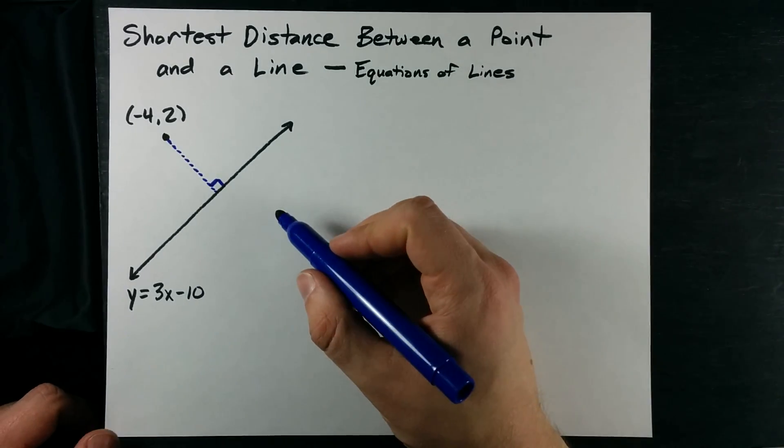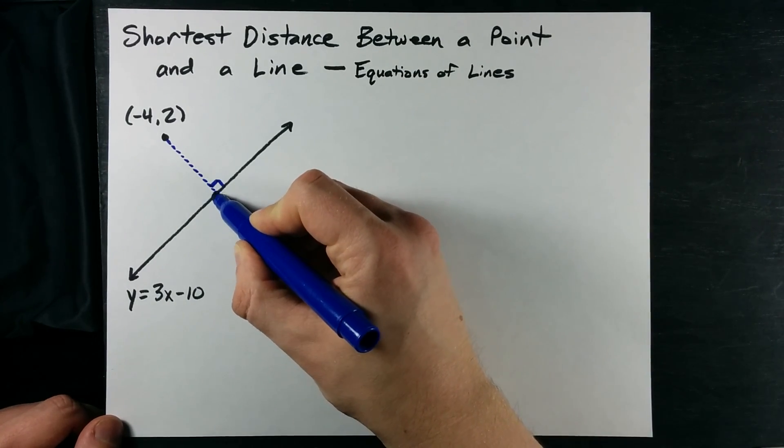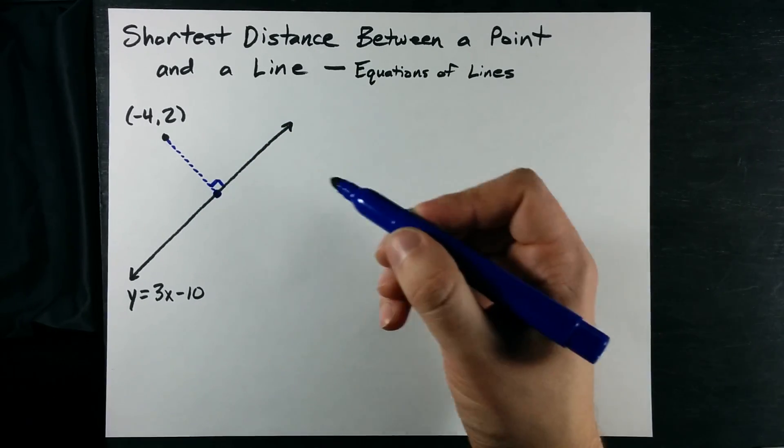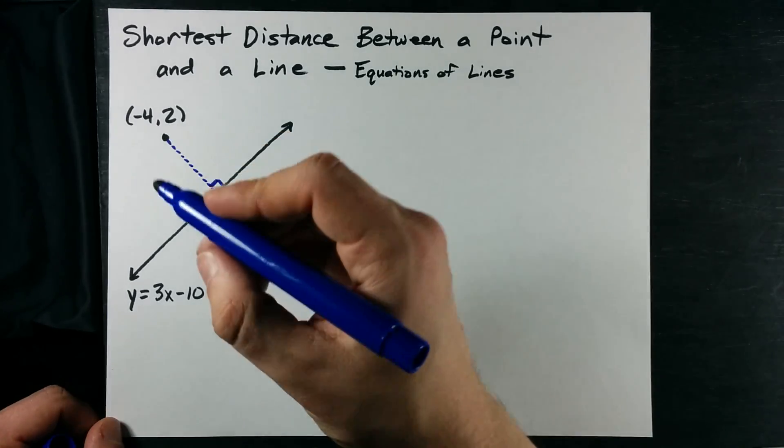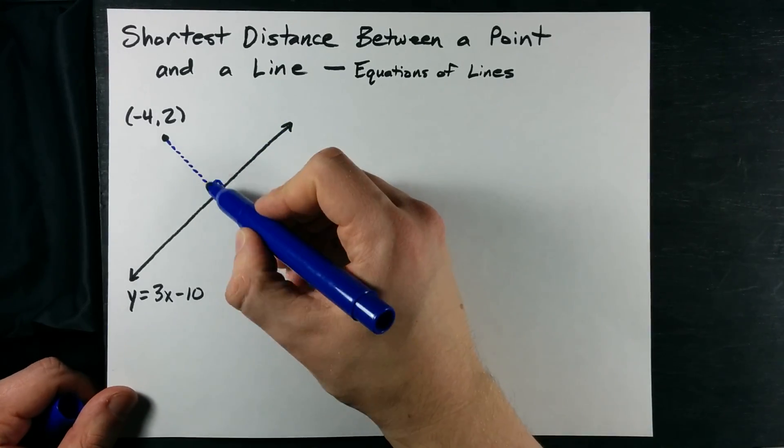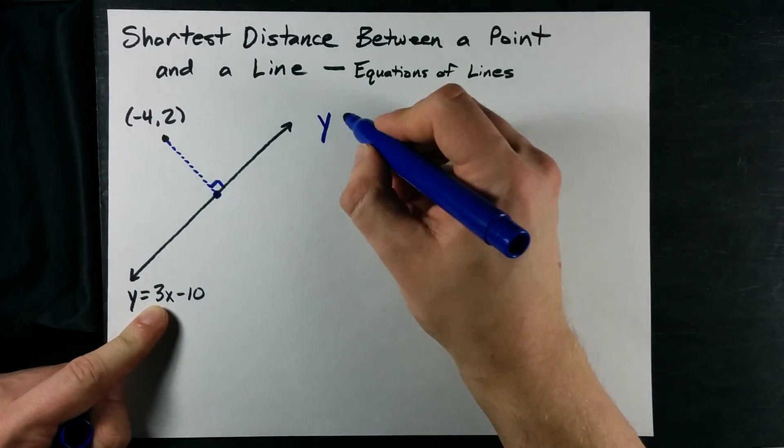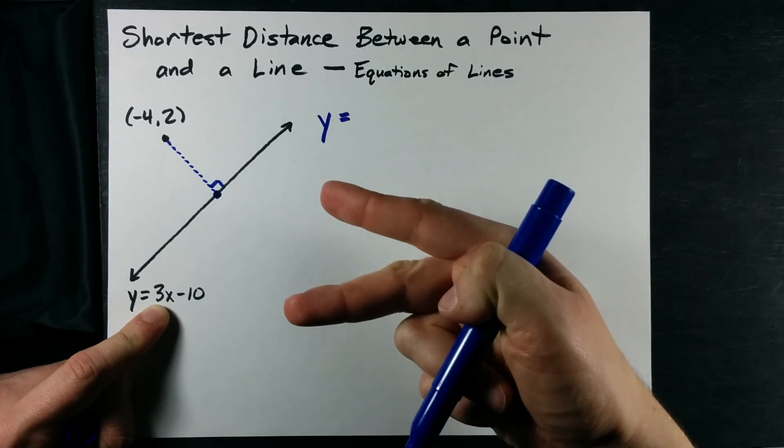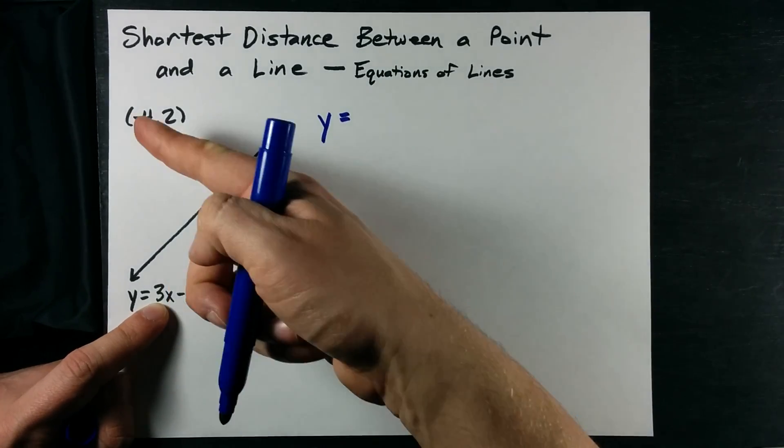Now, to get the distance between this point and whatever point these two things meet at, we need to find the equation of this line, solve for the point of intersection, and then do a distance formula. How do we find the equation of this line segment? Well, because it is perpendicular, and we know the slope of this other line, we now know the slope of this line segment, because it has to be a negative reciprocal of this slope in order for it to be perpendicular.